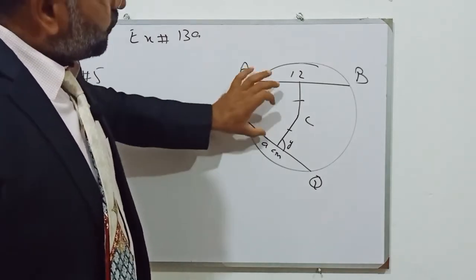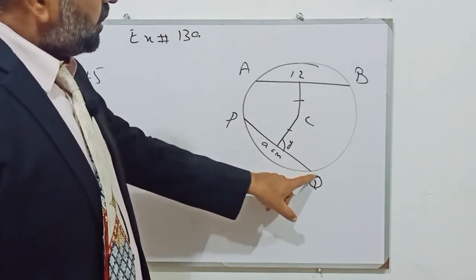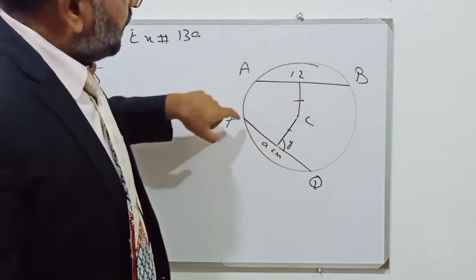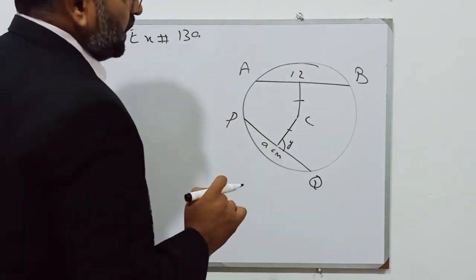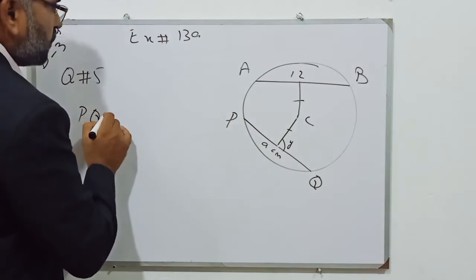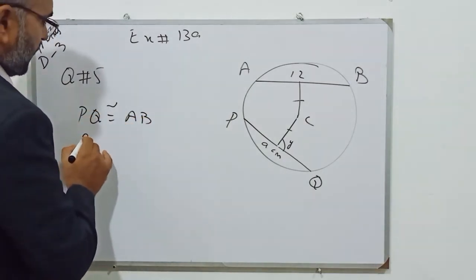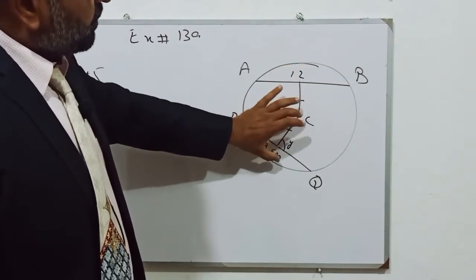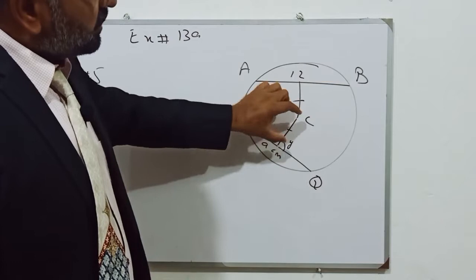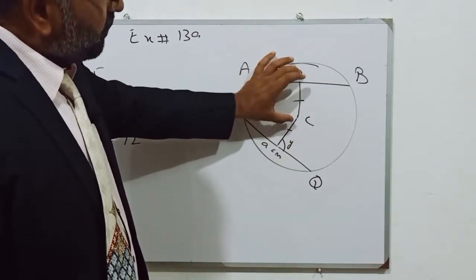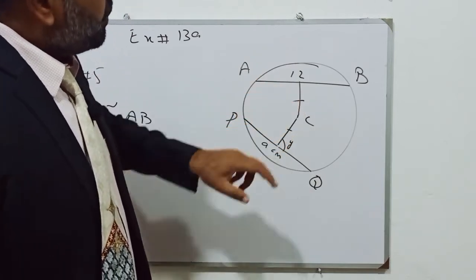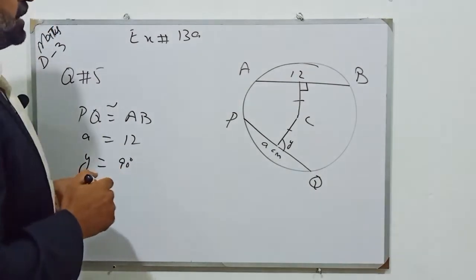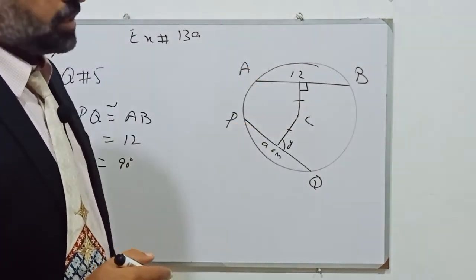Keep in mind that if two chords are equidistant from the center, then they are congruent, so PQ and AB are equidistant from the center. That is why AB and PQ will be equal, so the value of PQ is 12, meaning PQ is congruent to AB, so A is equal to 12. Also, angle Y will be equal to 90 degrees because both lines are perpendicular on the chord.